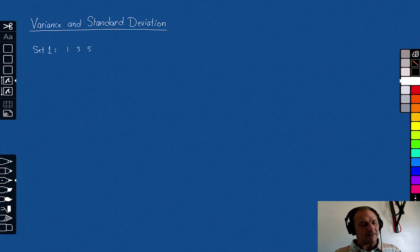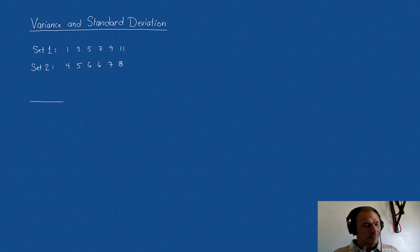We're going to have two data sets. Set one has the data values of 1, 3, 5, 7, 9, and 11. Data set two has the values of 4, 5, 6, 6, 7, and 8. Just so that you can see these, I'm going to sketch them. Let's make a little dot plot of this picture.